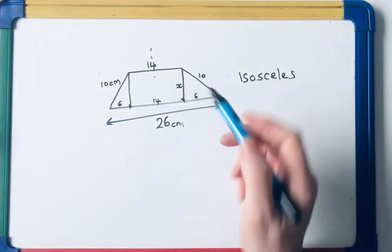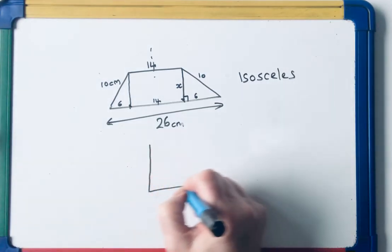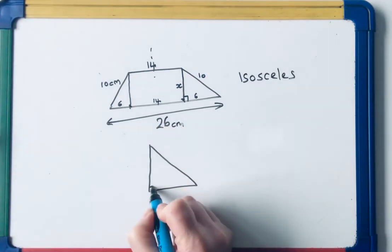So now, in order to find x, I've actually got a right-angled triangle, and I can use Pythagoras' theorem.